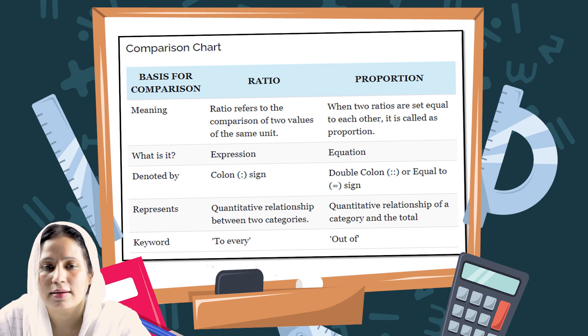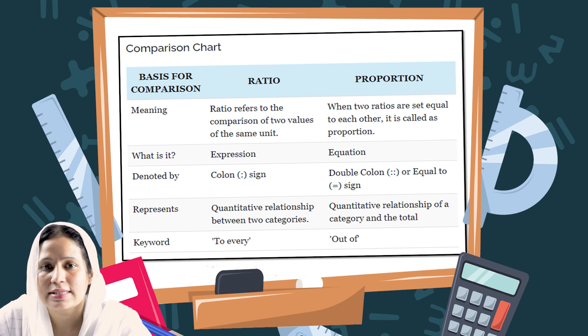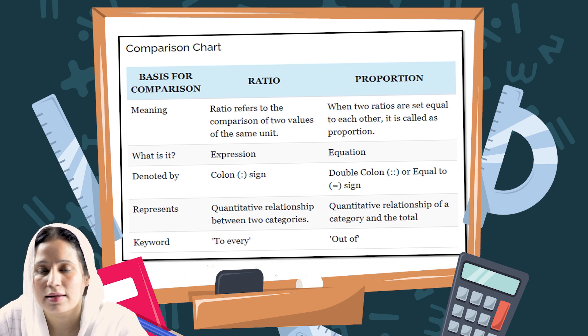Now we have a comparison chart of ratio and proportion. Ratio is a comparison between two values of the same unit, whereas proportion is the equality between the ratios. Ratio is an expression, whereas proportion is an equation. Ratio is denoted with the colon sign, whereas proportion is denoted with the double colon or equal sign.